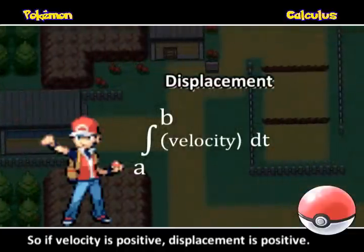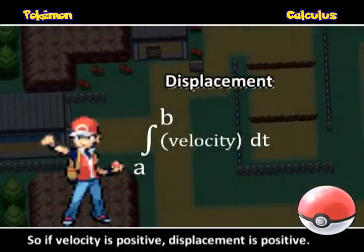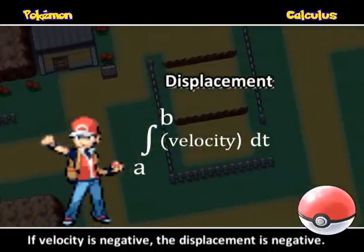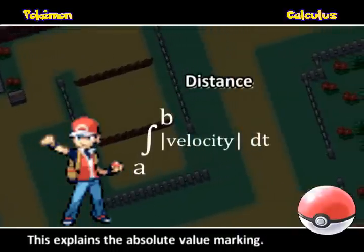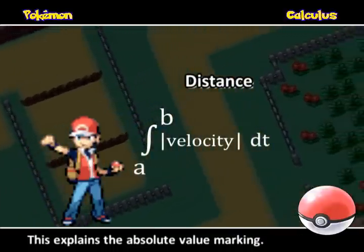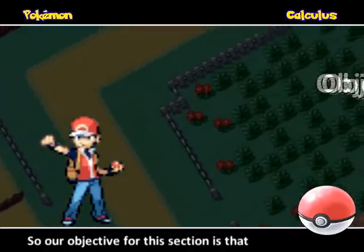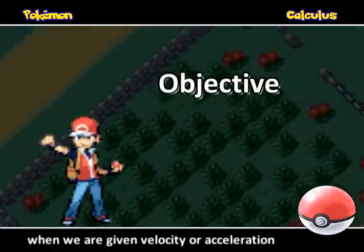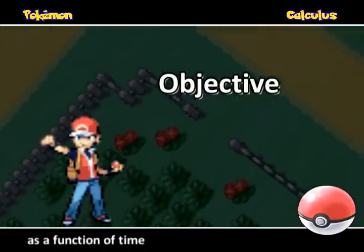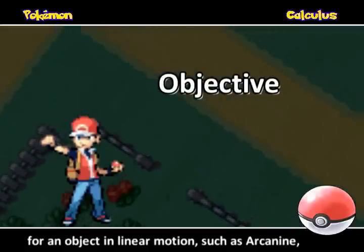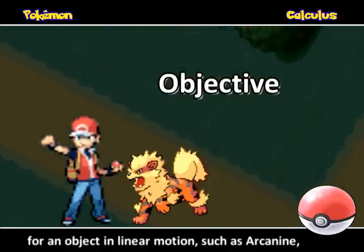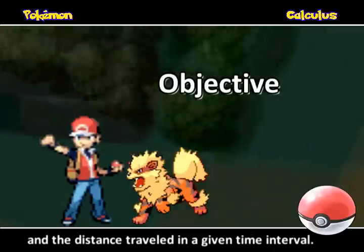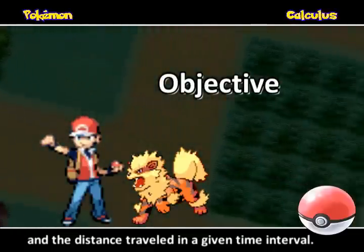So if velocity is positive, the displacement is positive. If velocity is negative, the displacement is negative. This explains the absolute value marking. Our objective for this section is: when we are given velocity or acceleration as a function of time for an object in linear motion, such as Arcanine, we find the displacement at a given time and the distance traveled in a given time interval.